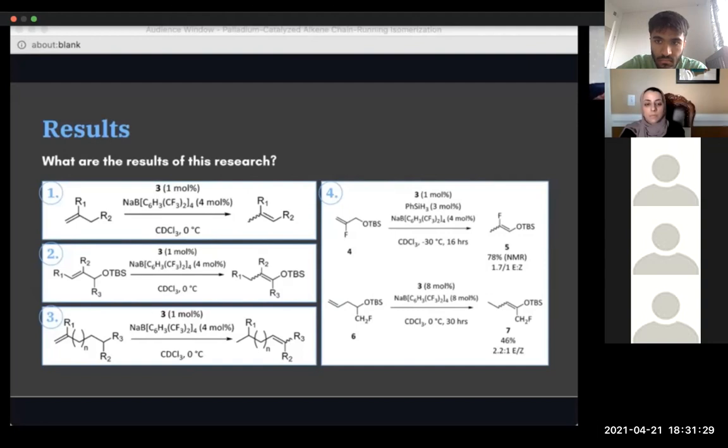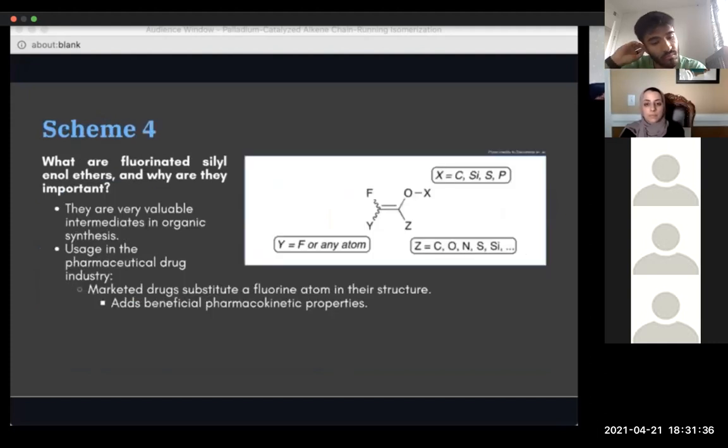You've probably noticed I haven't talked about reaction scheme 4 yet, and that's because it deals with the synthesis of fluorinated siloenol ethers. What are they, and why are they important? Fluorinated enol ethers follow the structure shown in this image, so in our case X would be a silicon so that we get fluorinated siloenol ethers. But why do these compounds actually matter? There's actually an entire 30-page review paper dedicated to the synthesis and reactivity of fluorinated enol ethers, so clearly they're important, and here's the reason why. In recent years, more and more marketed drugs tend to incorporate a fluorine atom into their structure because it enhances the pharmacokinetic properties of such compounds. The synthesis of fluorinated organic molecules, like the ones shown in scheme 4 from the last slide, has become an incredibly active research field. Not surprisingly, fluorinated siloenol ethers are a very valuable intermediate in organic synthesis.